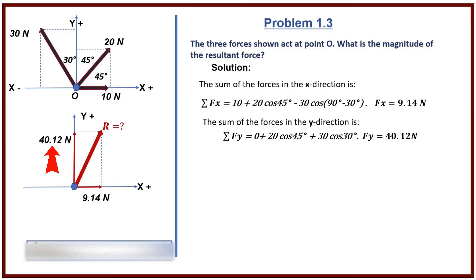R squared equals 9.14 squared plus 40.12 squared. R equals square root of 9.14 squared plus 40.12 squared. R equals 41.17 newtons.